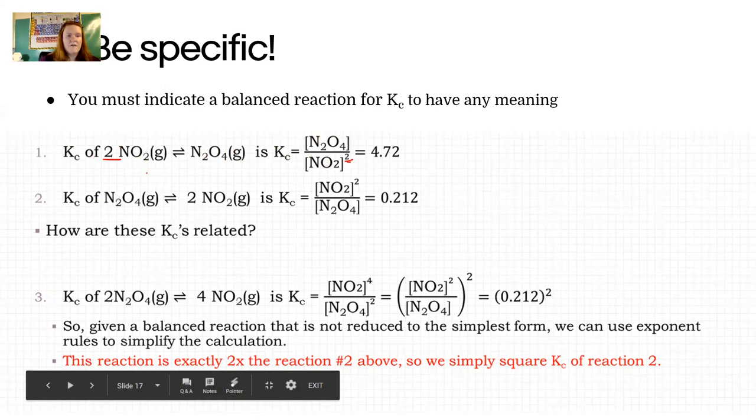If I flip the reaction around so N2O4 is decomposing to form two NO2s, just flip the Kc around, which means we're inverting these two things. If you go one divided by 4.72 or one divided by 0.212, you're gonna get the other number. They're just inverted, you just flip them over.